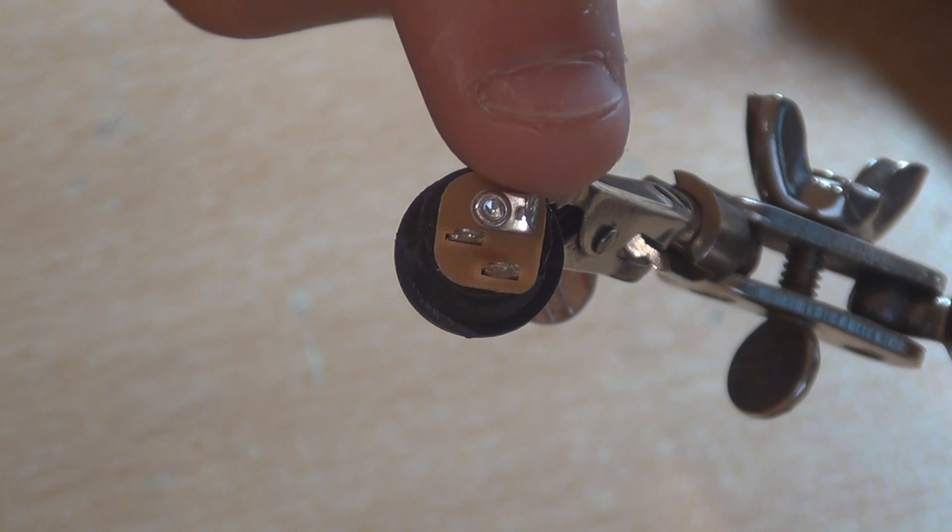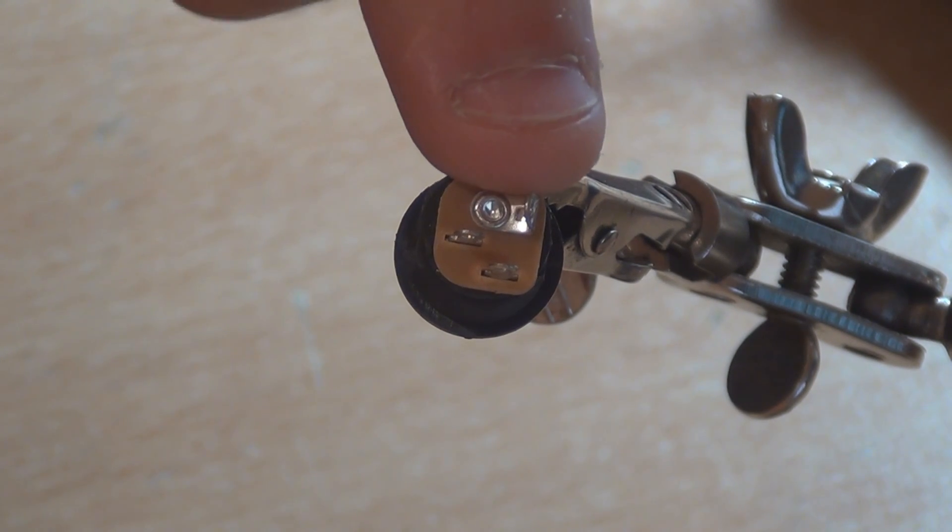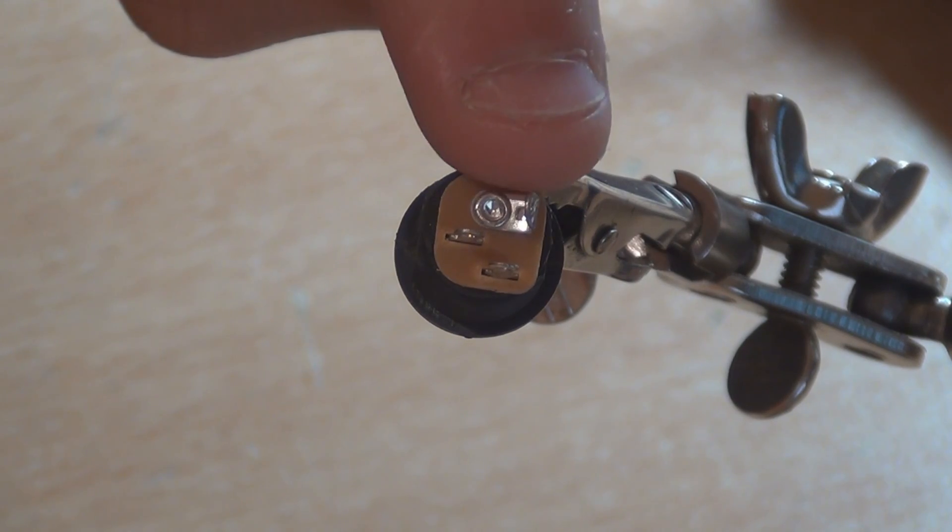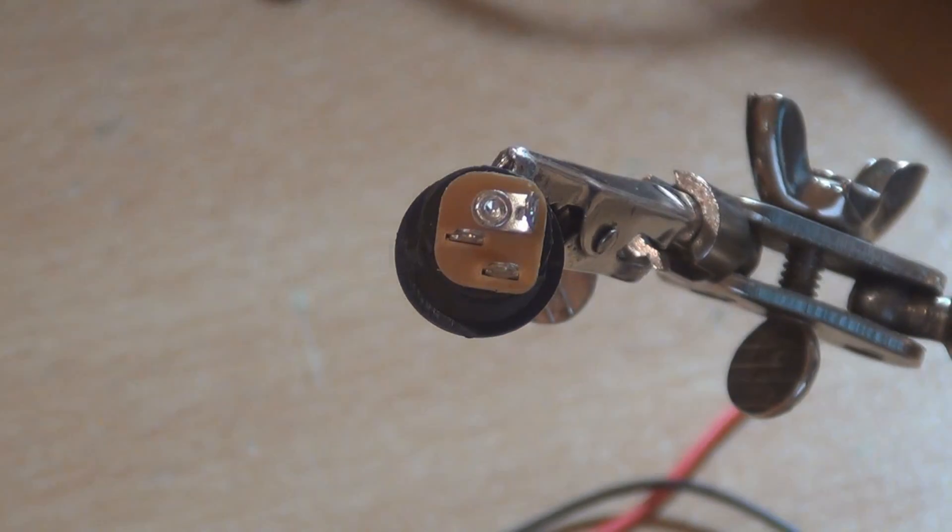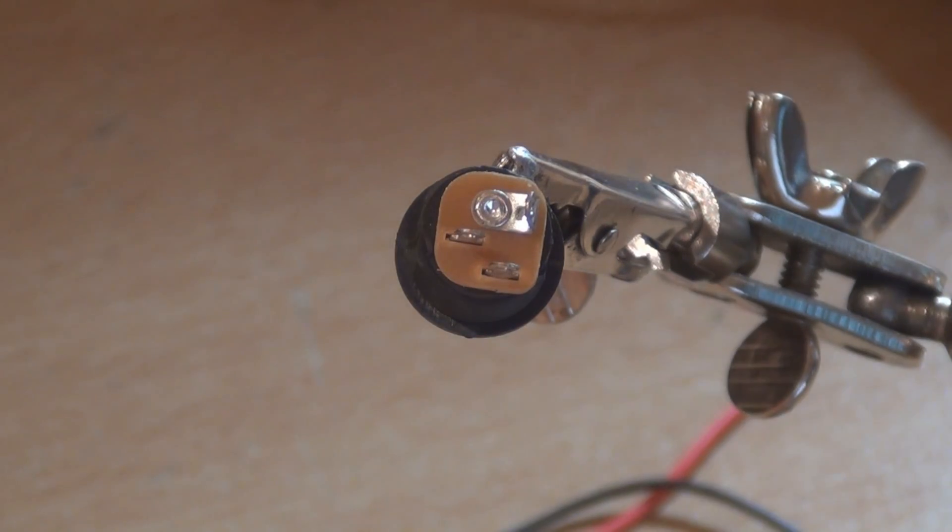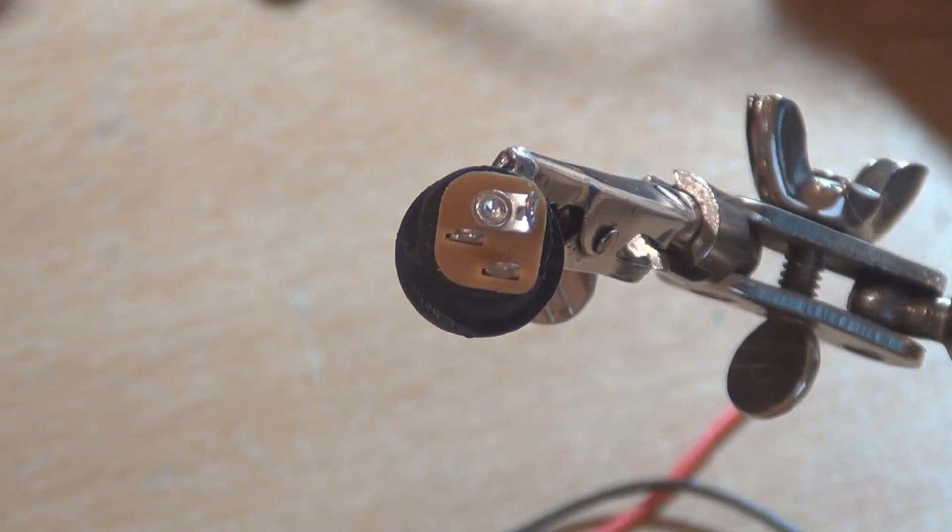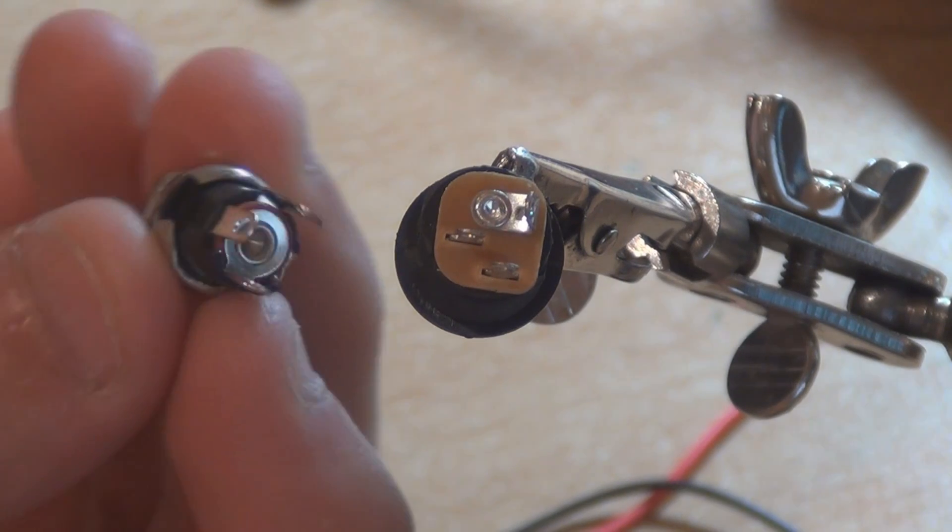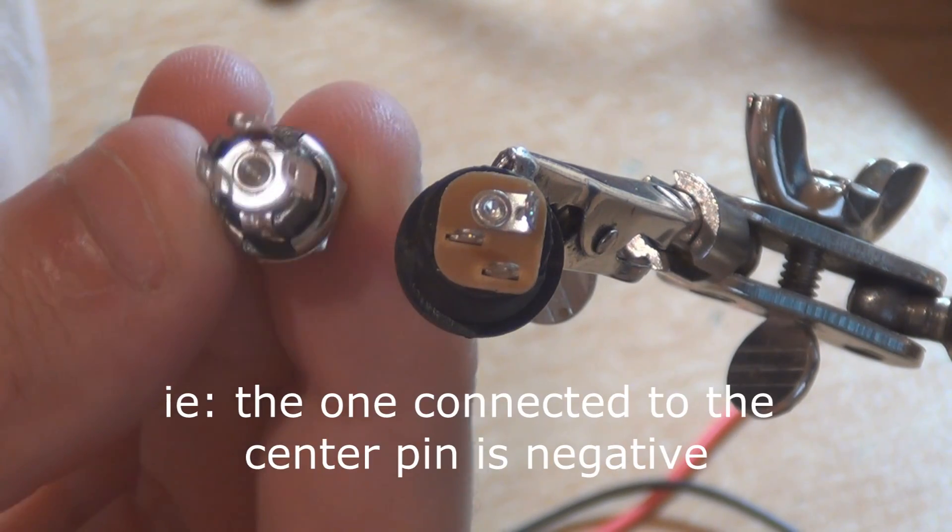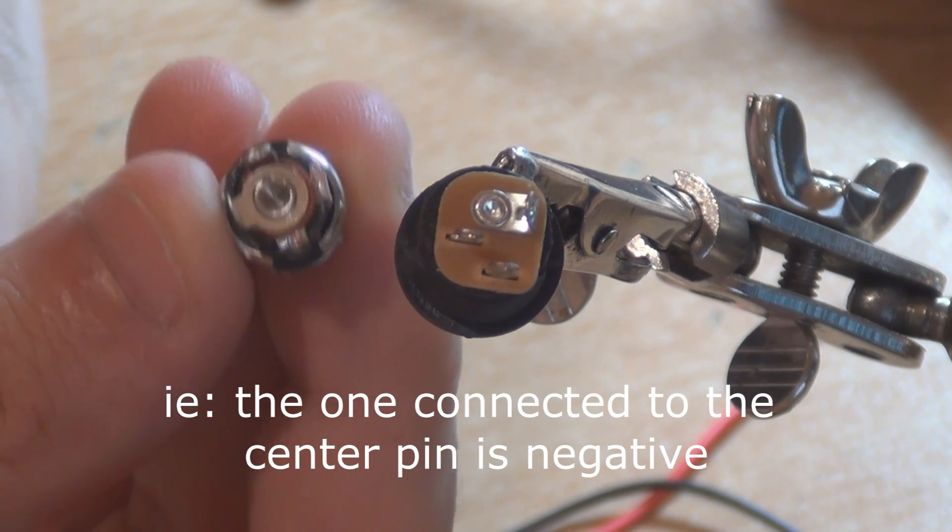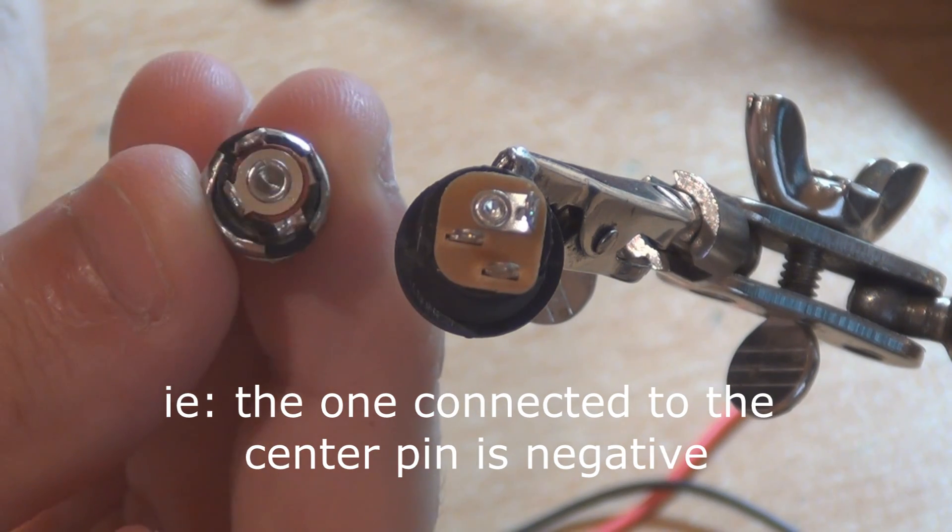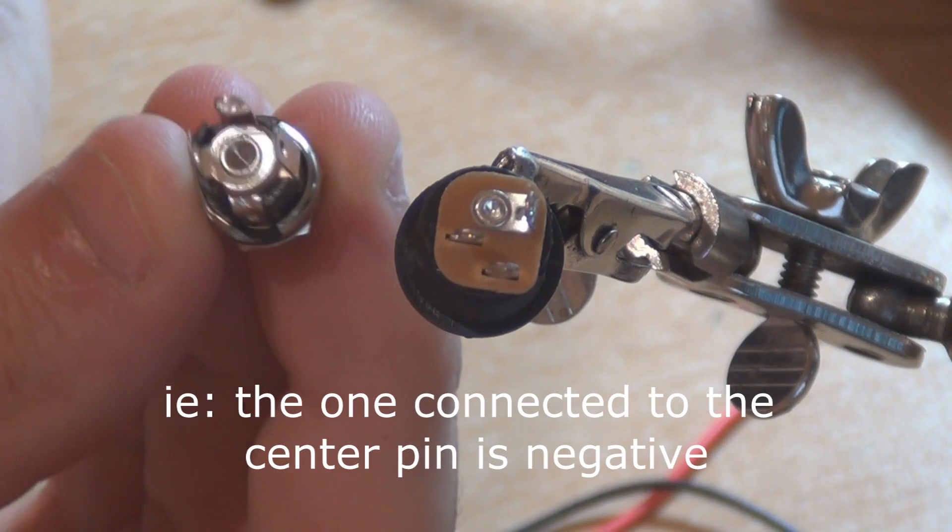Connect both grounds - the one coming from the device and the one from the battery snap - to this connection, the one that looks different. Even if you're using a metal DC jack, the ground connection also looks different. You can see that with this one, the one near my thumb has a round disc in the middle, so that would be your ground in this case.